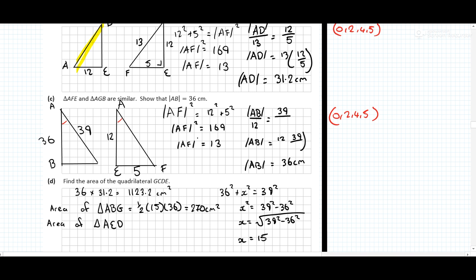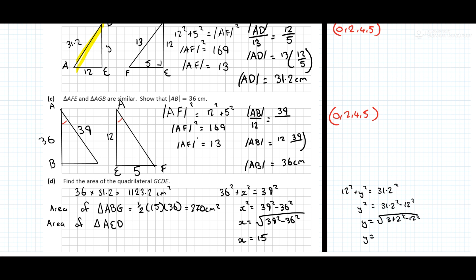For triangle AED: AE is 12 and AD is 31.2. Using Pythagoras: 12 squared plus y squared equals 31.2 squared. So y equals the square root of 31.2 squared minus 12 squared, which equals 144 over 5. The area is a half times 12 times 144 over 5, which equals 864 over 5 centimeters squared.